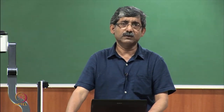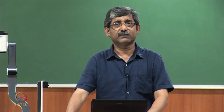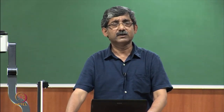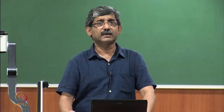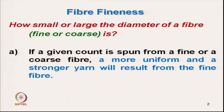By fineness we understand the cross-sectional shape: if a fibre is fine, the cross-sectional area should be less. But the main problem with most textile fibres is that they are not uniform. By knowing the fibre fineness we can understand various process-related parameters. If a given count is spun from a fine or coarse fibre, this affects yarn quality significantly.